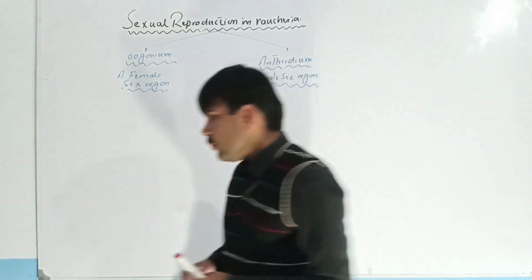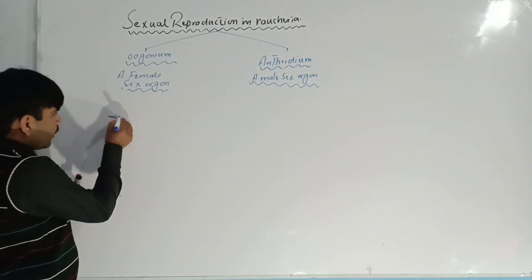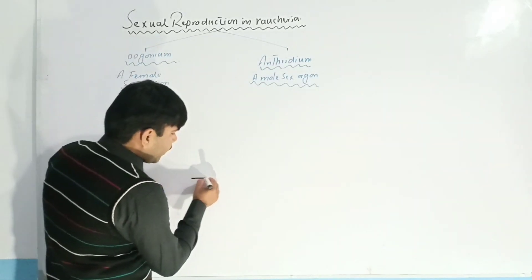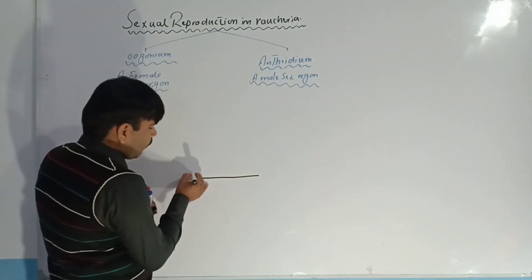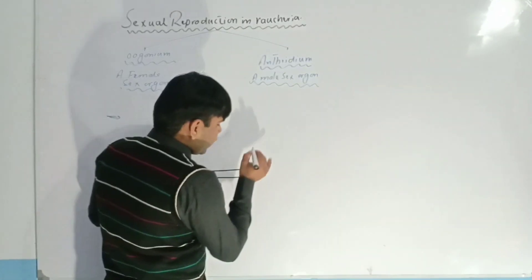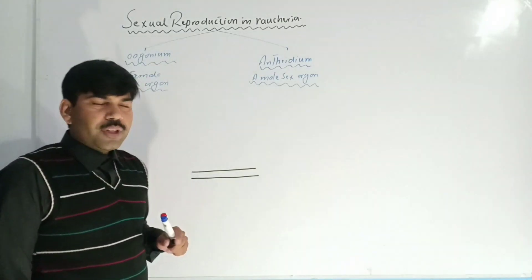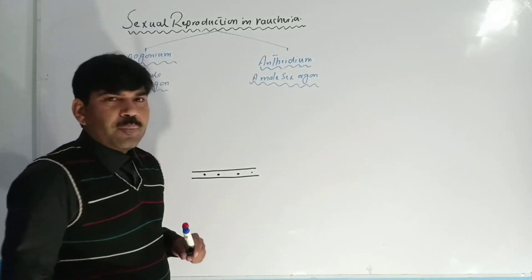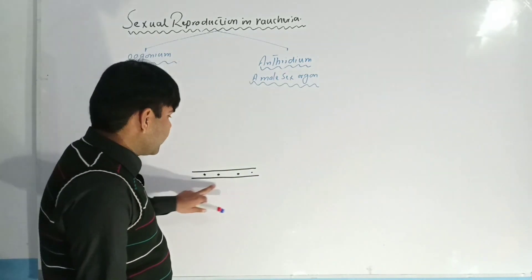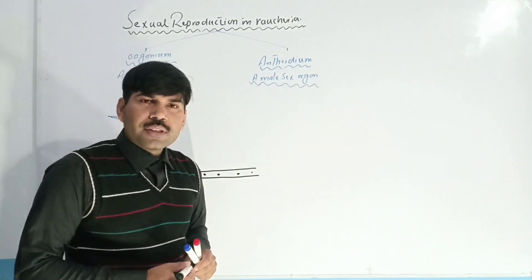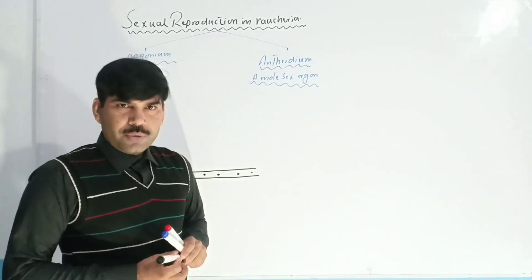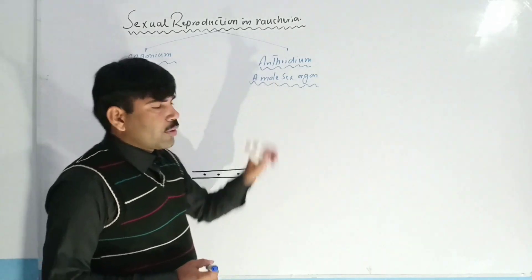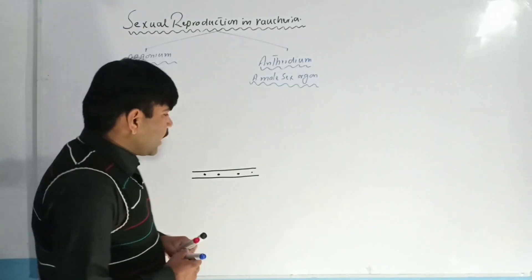The plant body of Vaucheria is coenocytic, which means there are no cross walls present, and many nuclei are present without separation or a septum in the plant body or filament of Vaucheria.